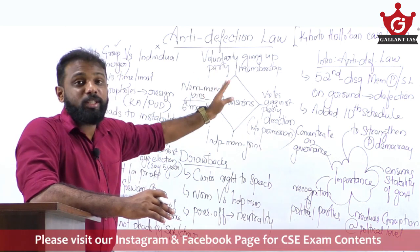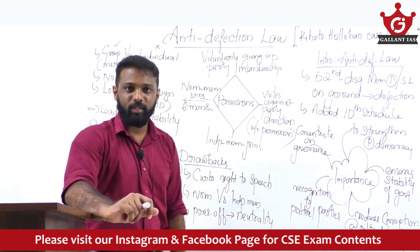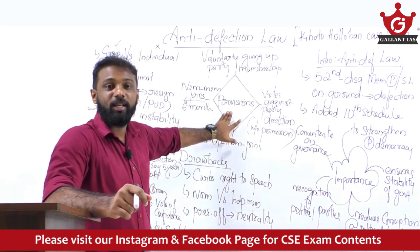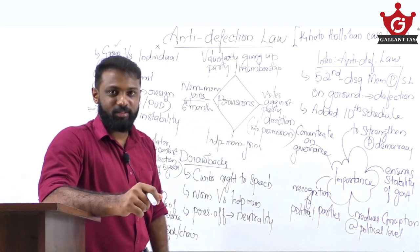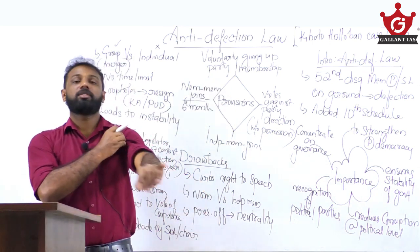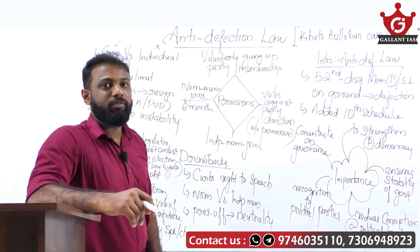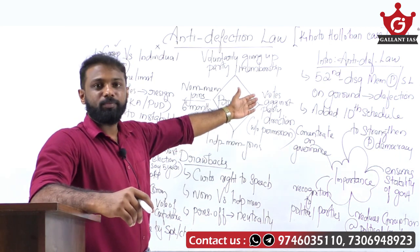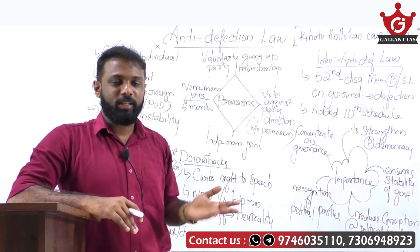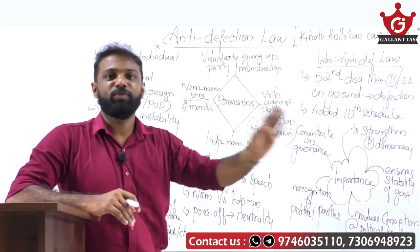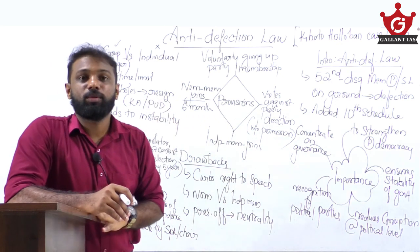Since it is a 250-mark question, we must write in three pages, covering some core provisions of anti-defection law. The question does not demand this, but we write it to give an extra edge to our answers. A member can be disqualified if, after getting elected, they voluntarily give up their party membership, or if a member of legislature votes or abstains from voting against the party's directions without permission.